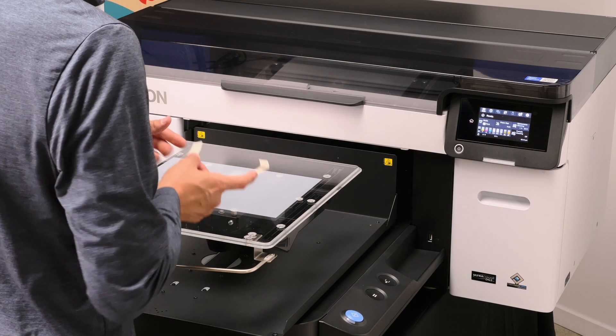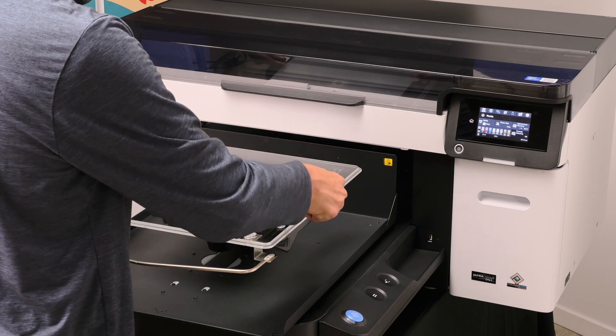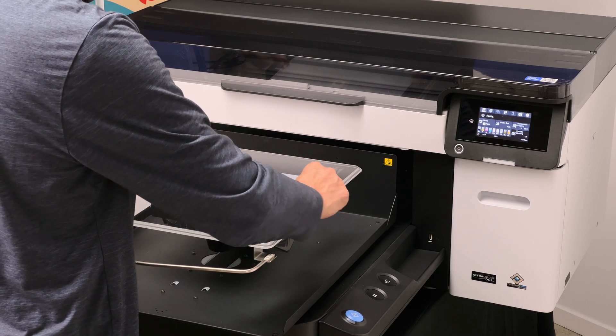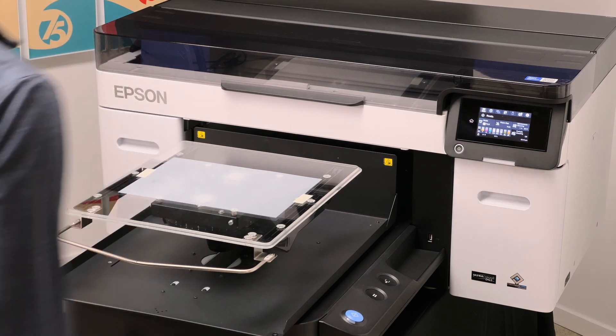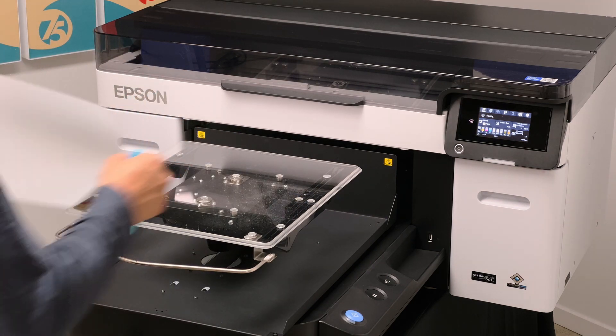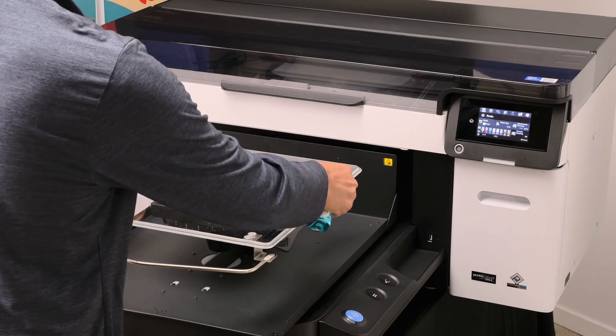First, we'll load our film onto the platen. You can secure it in place using a couple of pieces of masking tape. You can also lightly mist some water to create surface tension and apply the film in that manner.